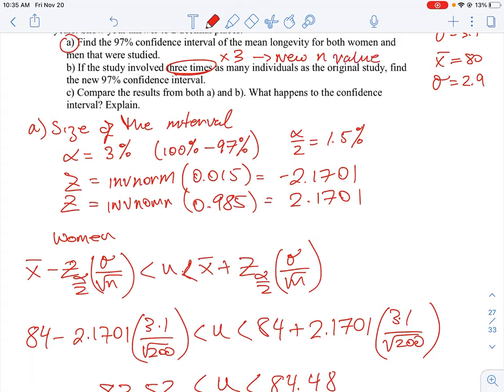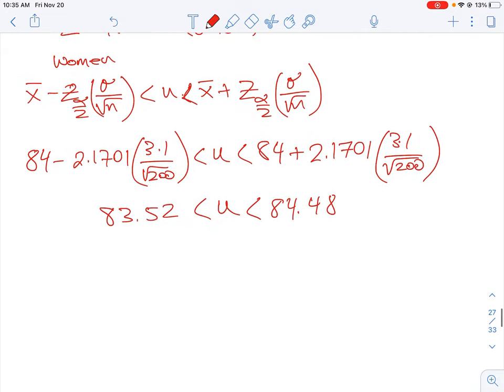Okay. So instead of having 200 for the women, let's we can do that part here for B. So this is the women with three times the sample size. Okay. So that is going to give us 600 here.